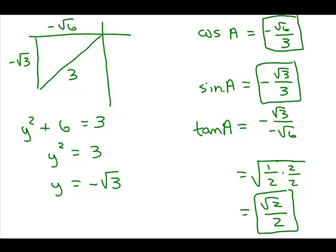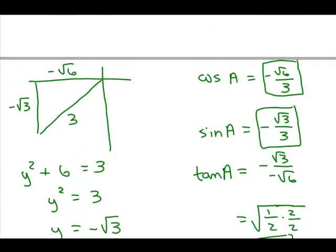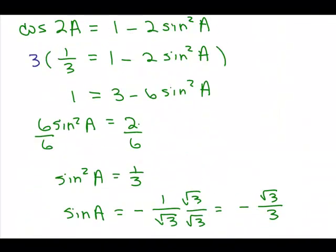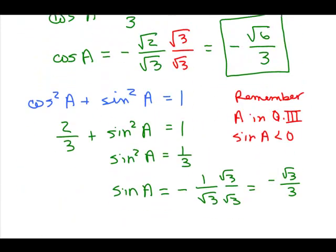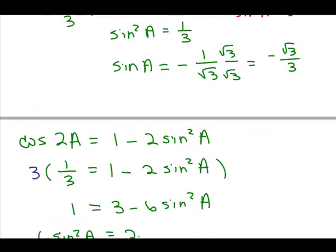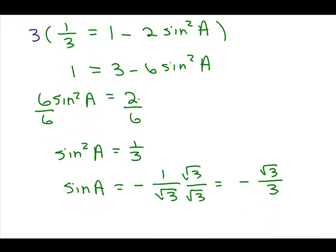Once you get one of them, you could draw the picture — that's one way — or you could use the double-angle formula to get the sine of a, or use the Pythagorean identity. You could also use half-angle identities; there are other ways to come up with the same answer. Just be careful of your signs.